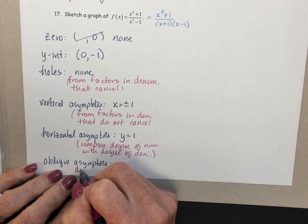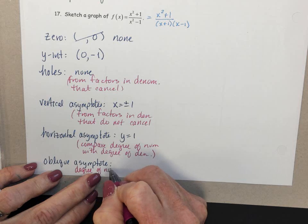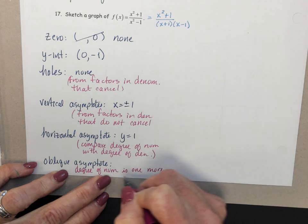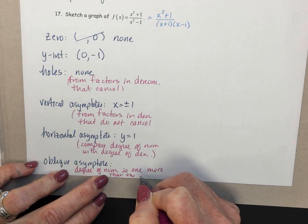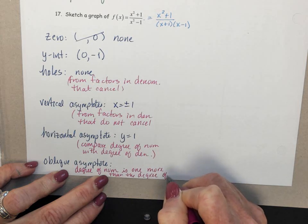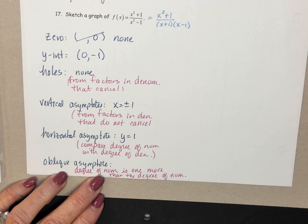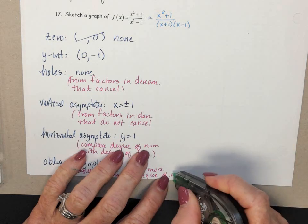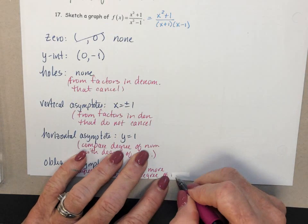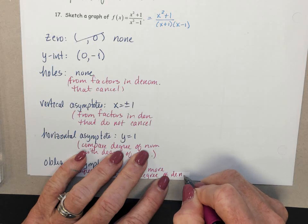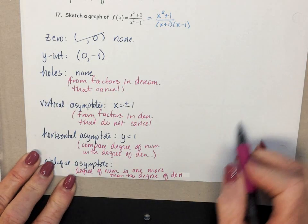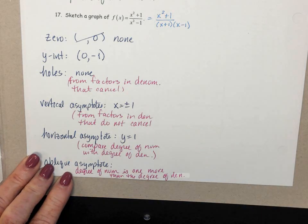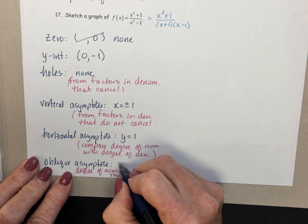The degree of the numerator is one more than the degree of the numerator. Uh-oh, degree of the numerator is one more than the degree of the denominator, sorry. I was thinking, you're probably wondering why I'm not writing over here. It's because I'm saving this space for something else, and I was thinking about telling you that, which is why I started writing things twice. And oblique asymptote, none.